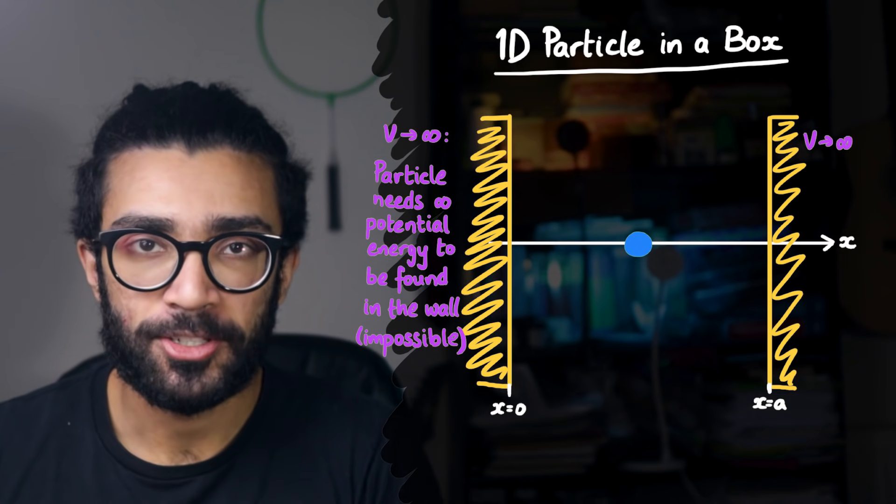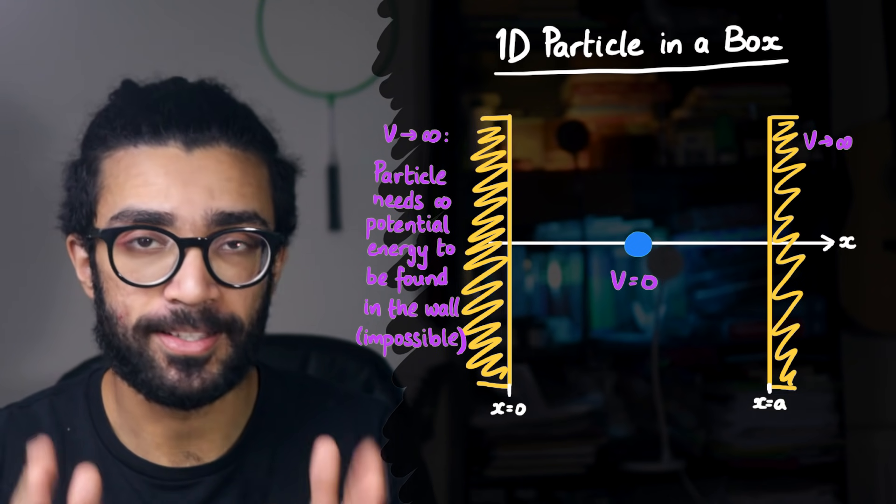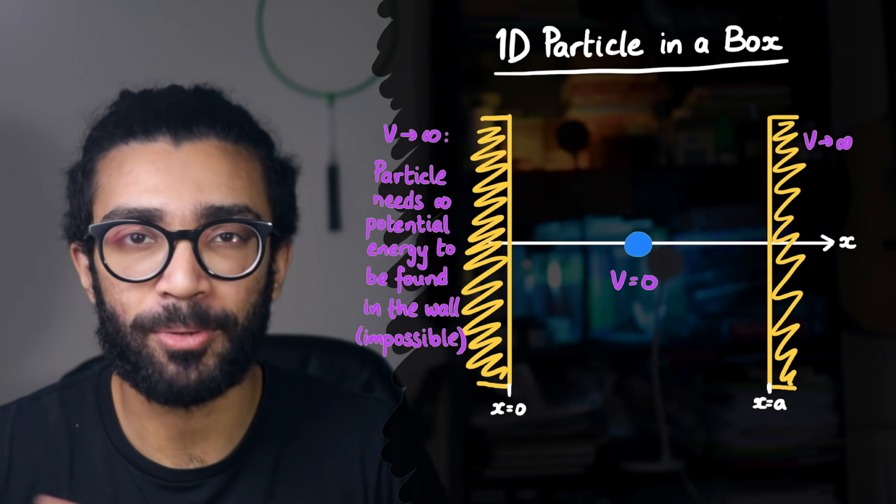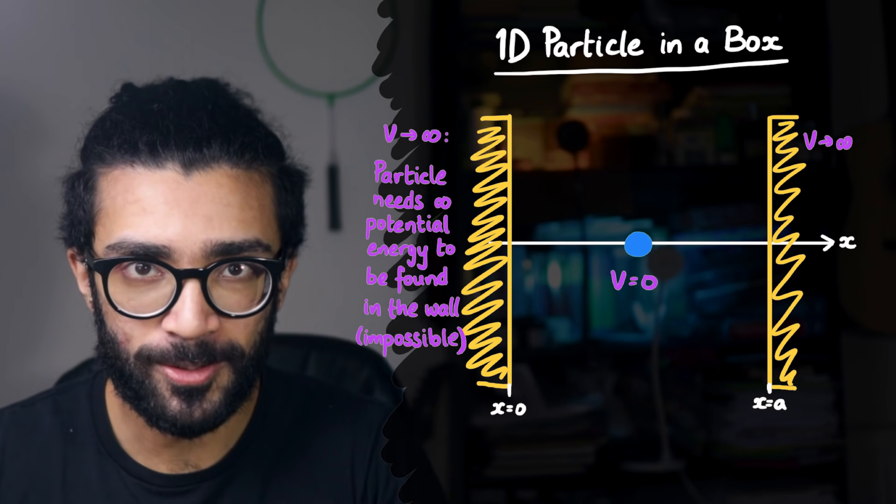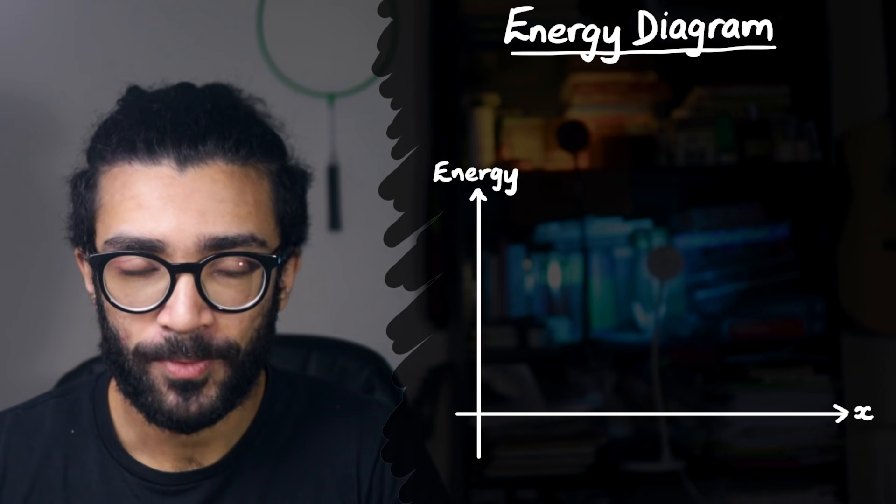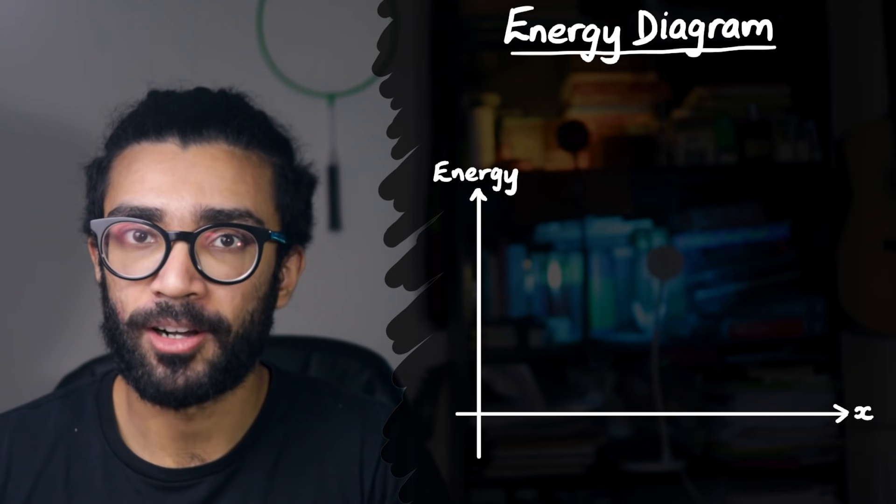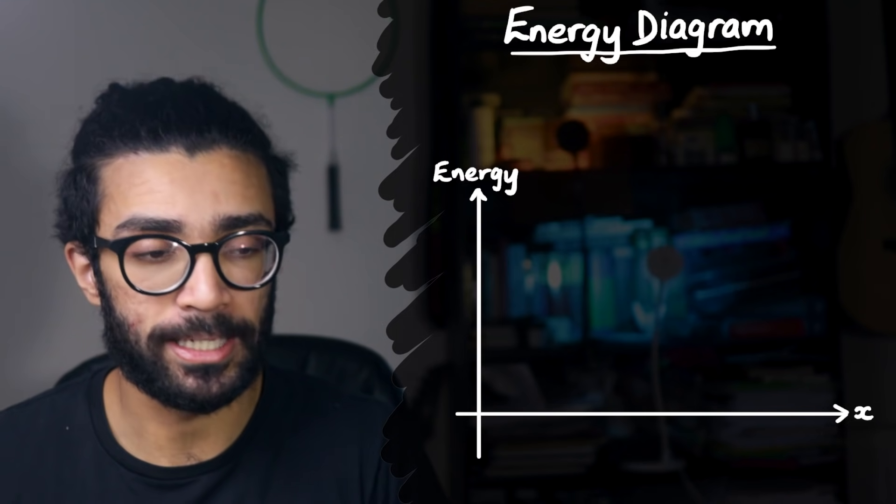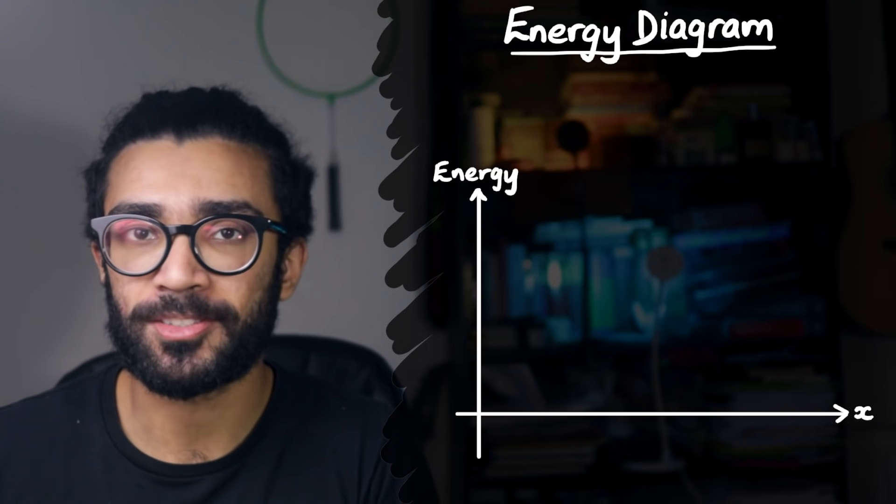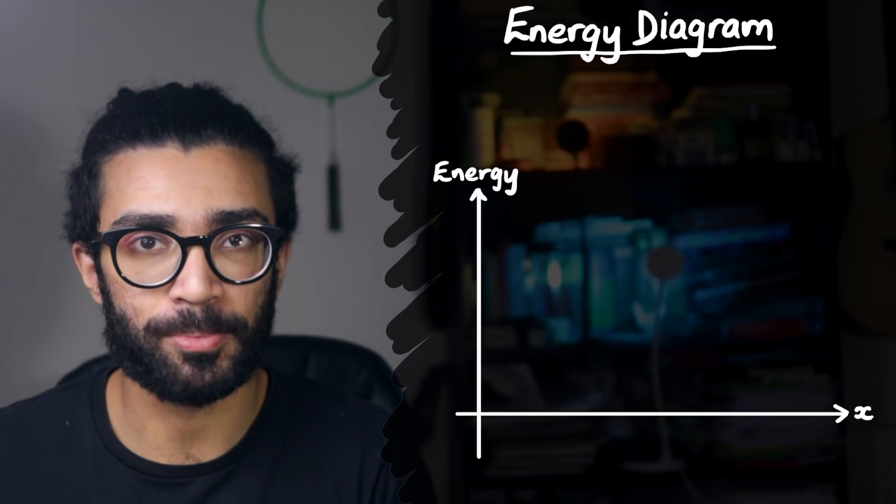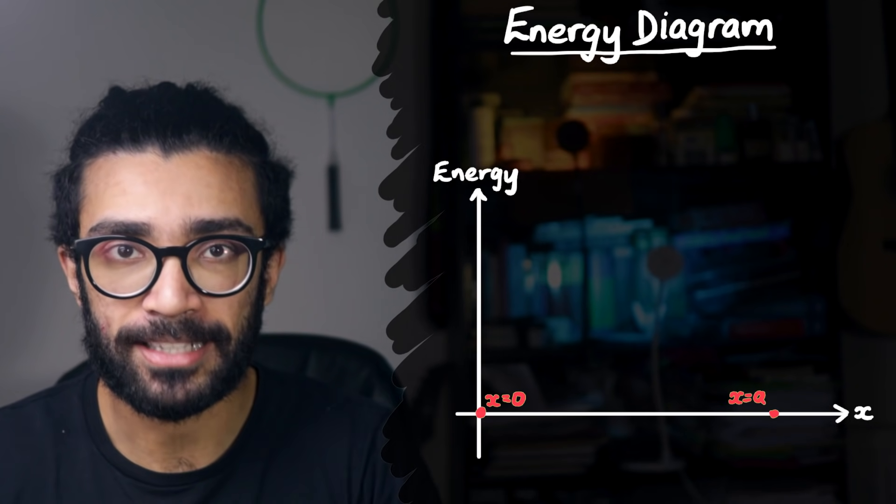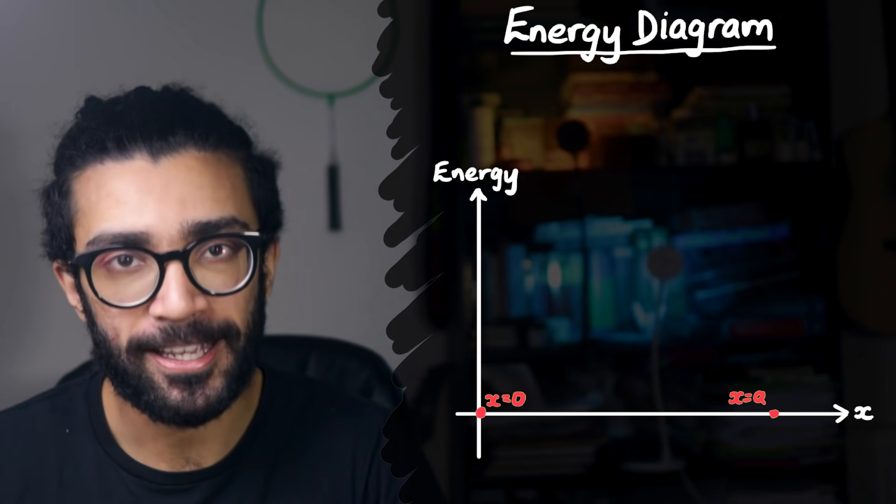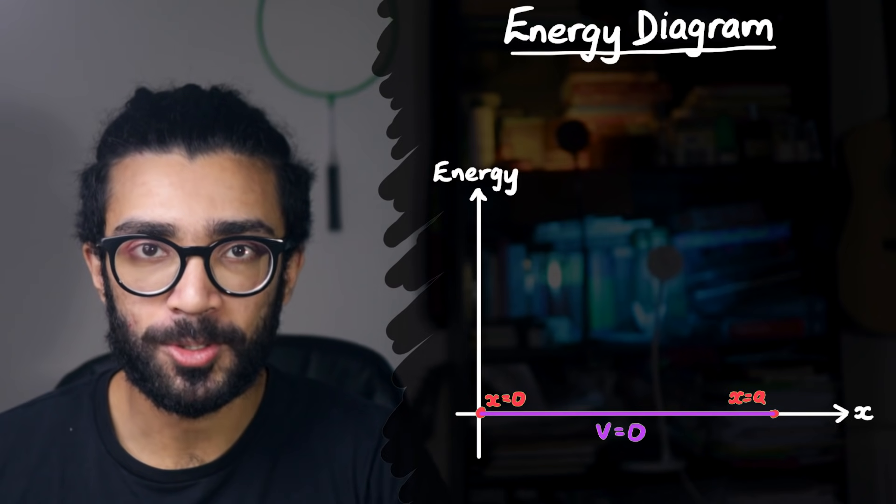In this case, we're saying that the potential in between the walls is zero, because there's nothing influencing the particle in any way between the walls. We can show this on an energy diagram. Let's say that the vertical axis of our graph is going to be the energy, whether that's the energy of the particle or the external potential energy. And the horizontal axis, of course, refers to the particle's position. And we've got the walls at x is equal to zero and x is equal to a.